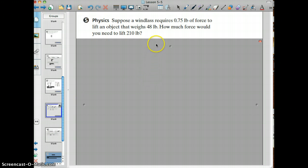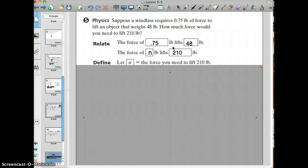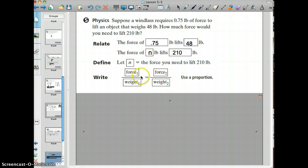Let's look at another example of direct variation here. Here's a physics problem. You have a windlass that requires 0.75 pounds of force to lift an object that weighs 48 pounds. How much force would we need to lift a 210 pound object? And so what we can do here is relate the force of 0.75 pounds will lift 48, and then we have the force of n pounds, which we don't know how much force we're going to need to lift 210 pounds of weight. So we can let n be the number of the amount of force needed to lift the 210 pounds. And what we can do here is we can write a proportion in which our force 1 over weight 1 equals force 2 over weight 2. And this would be the same. Remember, force over weight here will be the same as trying to figure out your constant, which is what you're going to do when you divide these two numbers.